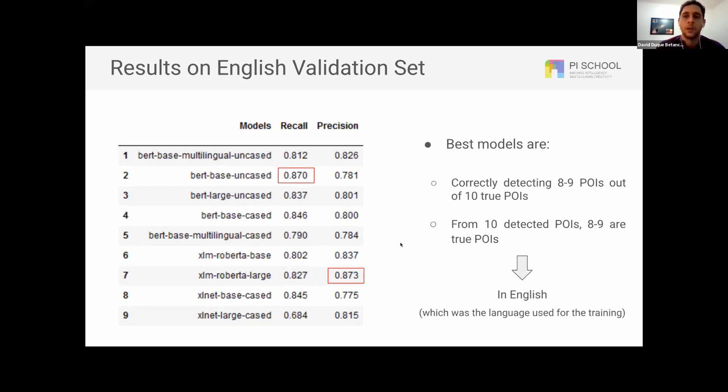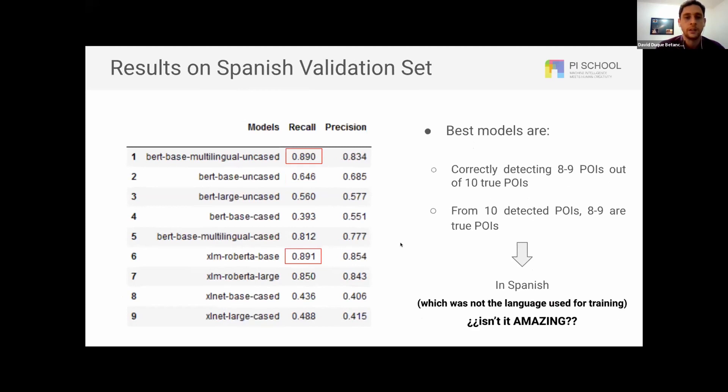But what would happen with another language? An entirely new language which has not been seen during the training. And we have assessed this with some Spanish sentences, and we have gotten pretty high results as well. Very high recall, very high precision, which are comparable to the language that we already trained on.